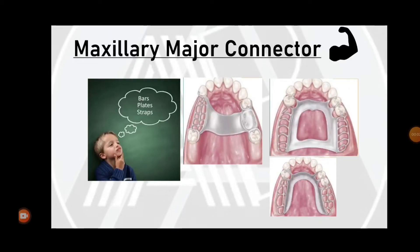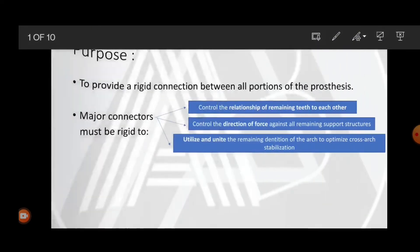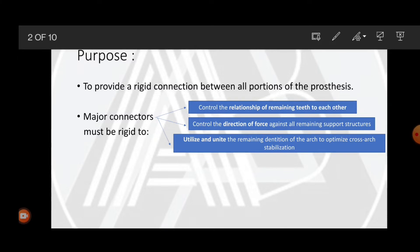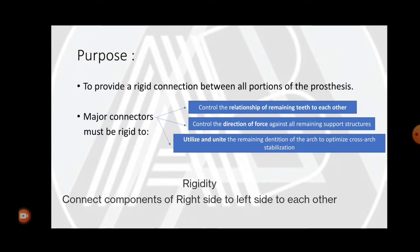Today we'll be learning about maxillary major connectors. The main purpose of a maxillary major connector is to provide a rigid connection between all portions of the prosthesis. It connects all components of the cast partial denture — such as direct retainers, rests, and minor connectors — from one side to another, that is from left to right.